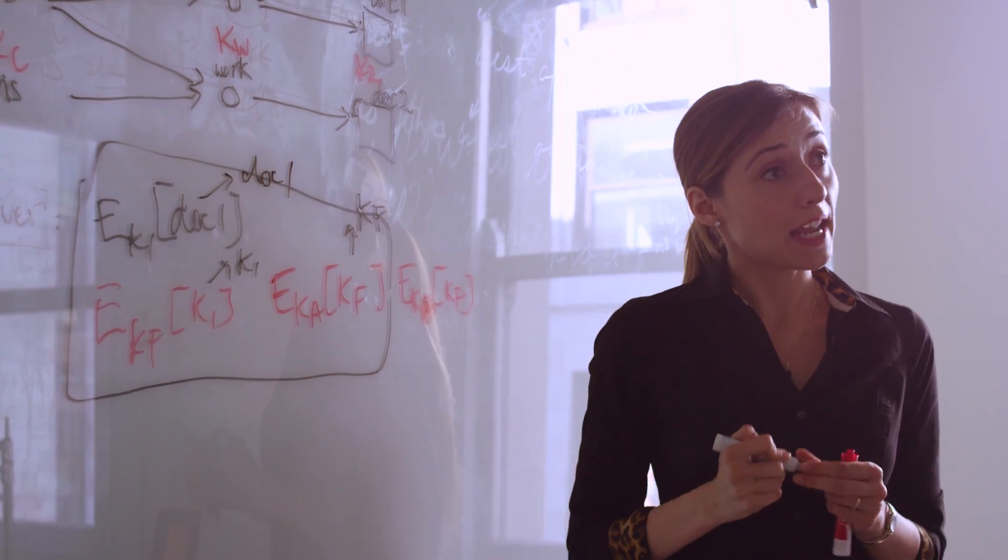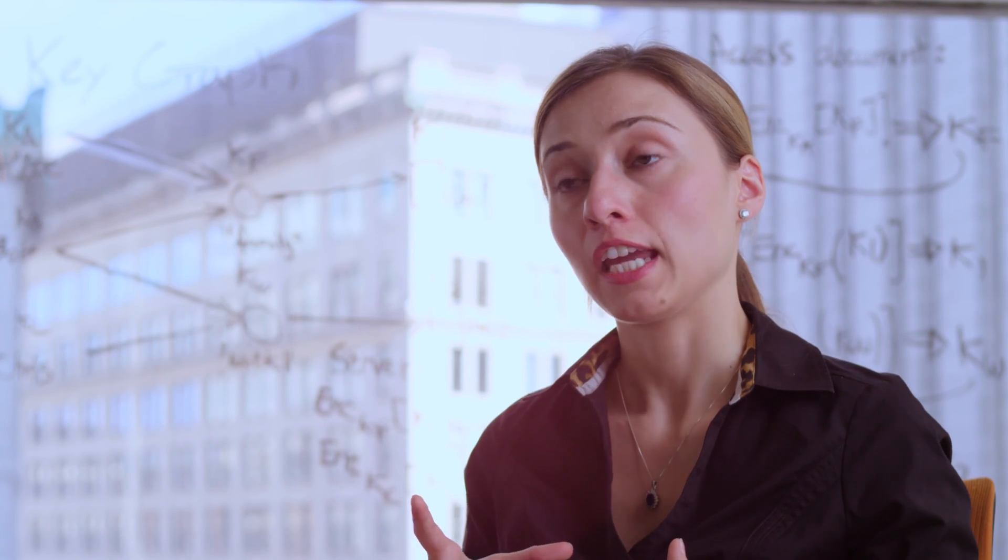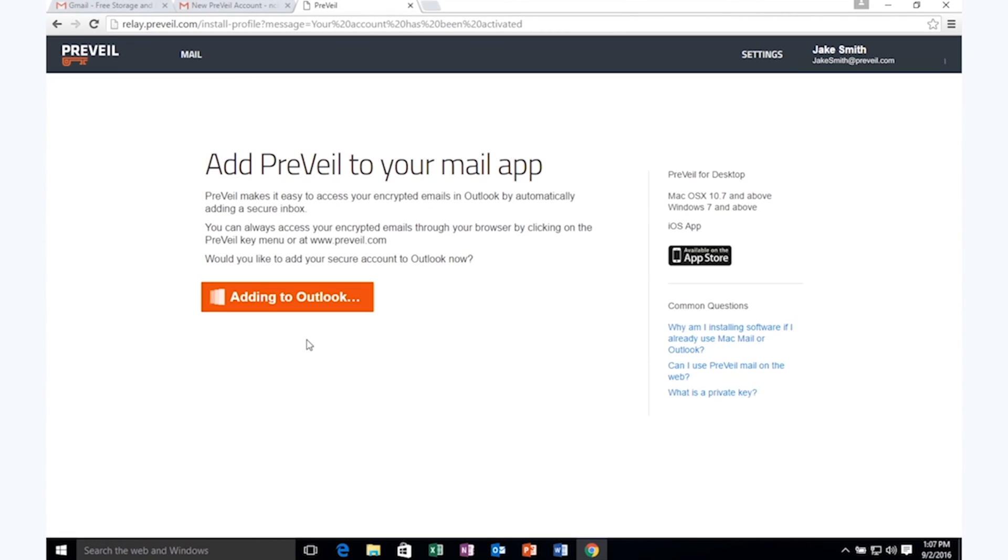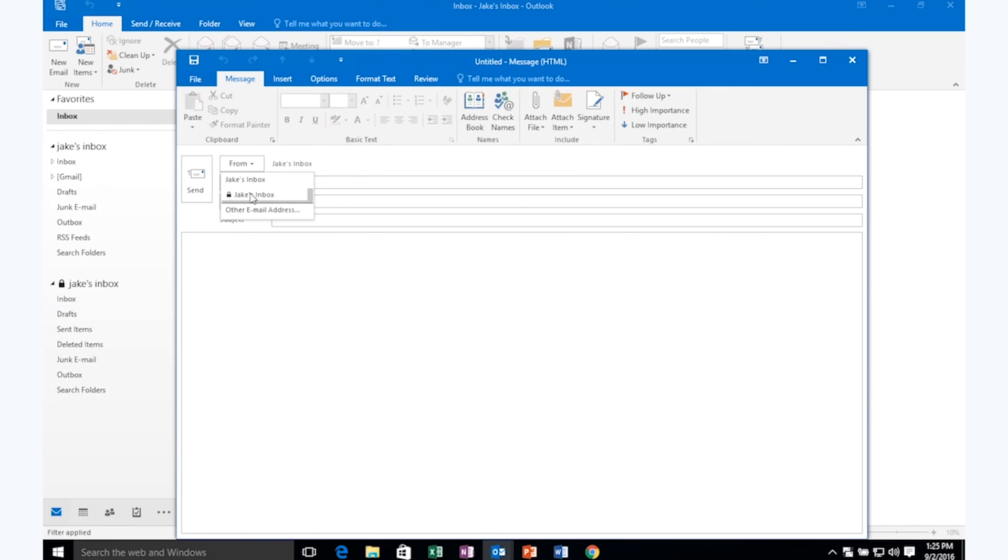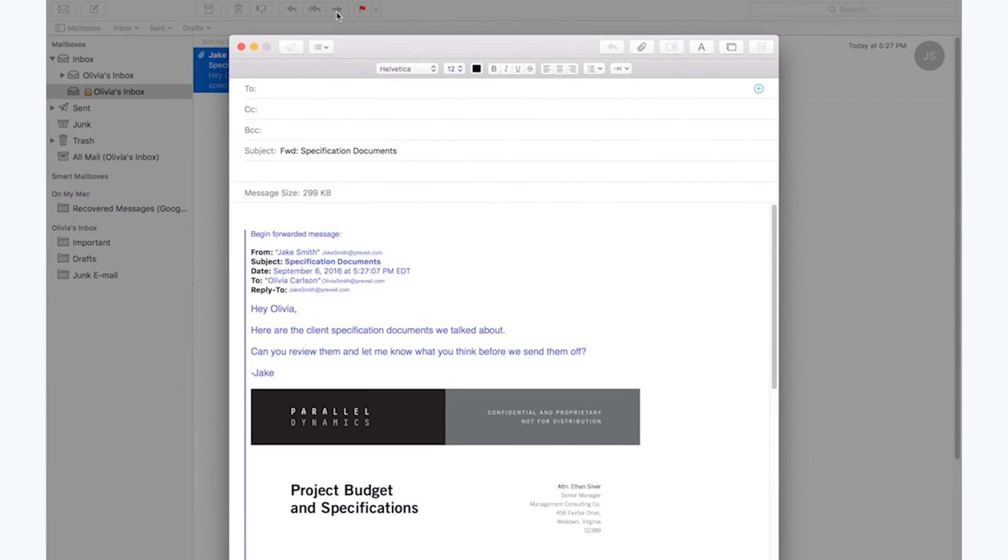So in this way, Alice was able to get access to her document. Prevail integrates in the way users are used to using services today. For example, a user can still use the Outlook client on Windows or the Mail client of Apple.